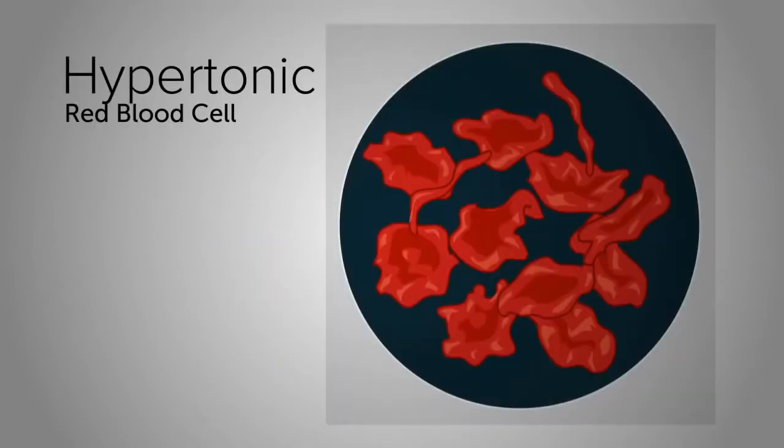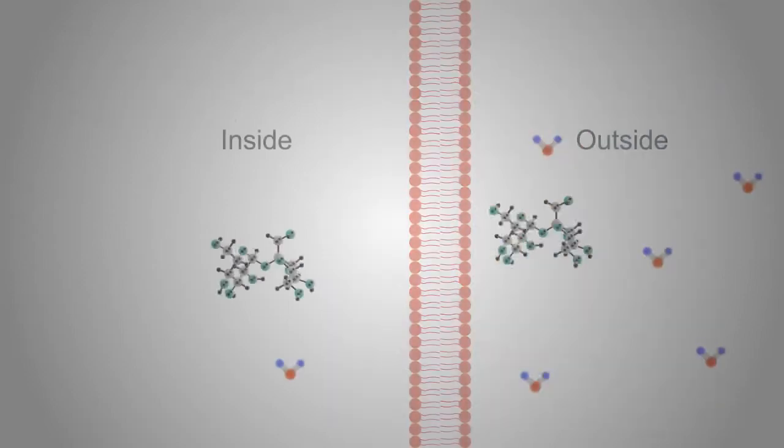In the case of a red blood cell, water molecules leaving a cell that is in a hypertonic solution causes the red blood cell to shrivel up like a raisin.